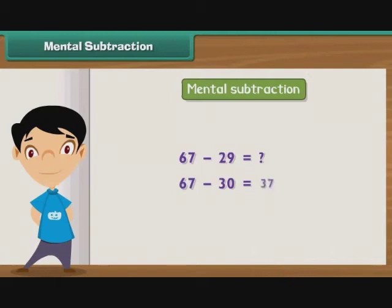The subtraction gives us 37. But we subtracted an additional 1, so we add 1 to the difference. Thus, the result of subtracting 29 from 67 is 38.